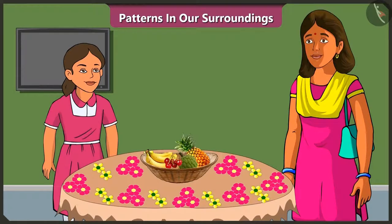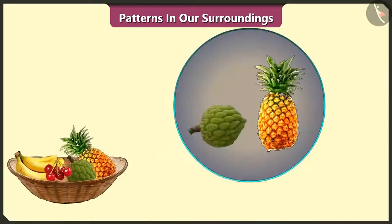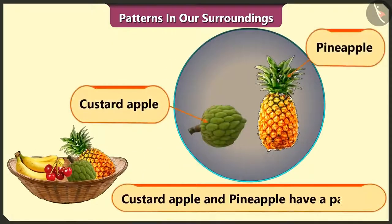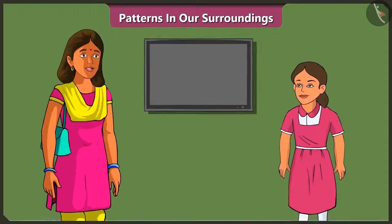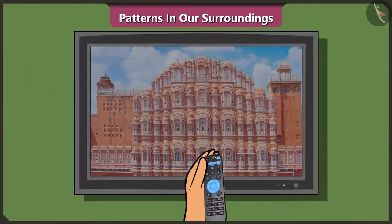Now, can you tell which of the fruits on the table have a pattern? Hmm, there is a pattern in custard apple and pineapple. Vinny, please turn on the TV.